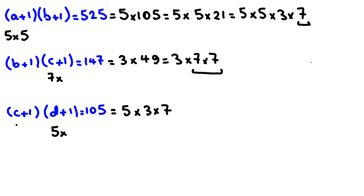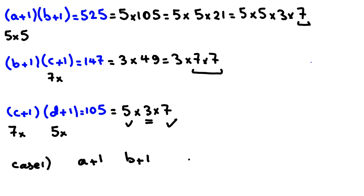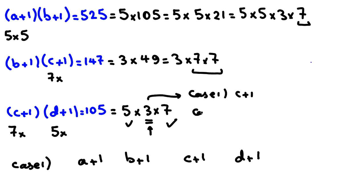Since C plus 1 must contain a factor of 7, and focusing on the third equation (C+1)(D+1) = 105 = 5 times 3 times 7, we place the 7 in C plus 1. That leaves only one factor of 3 to be distributed. We now consider two cases: Case 1, the factor of 3 goes to C plus 1; Case 2, the factor of 3 goes to D plus 1.